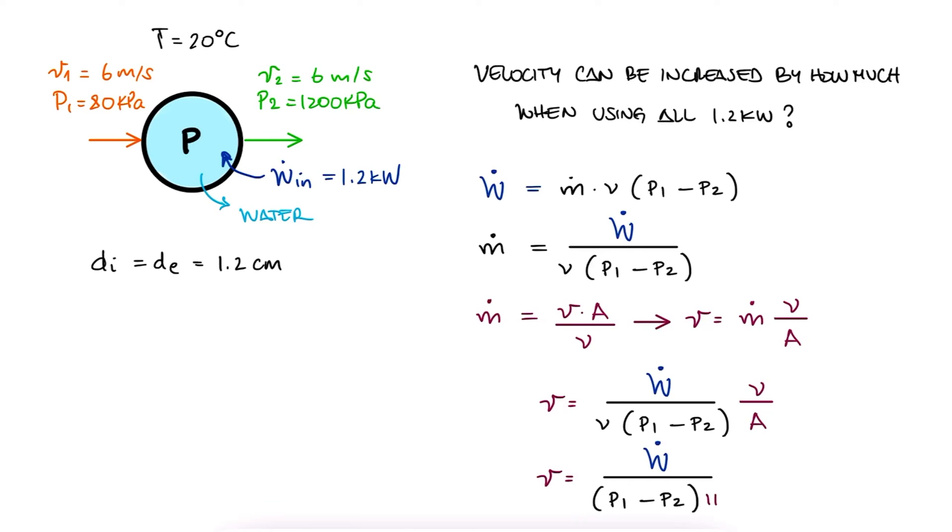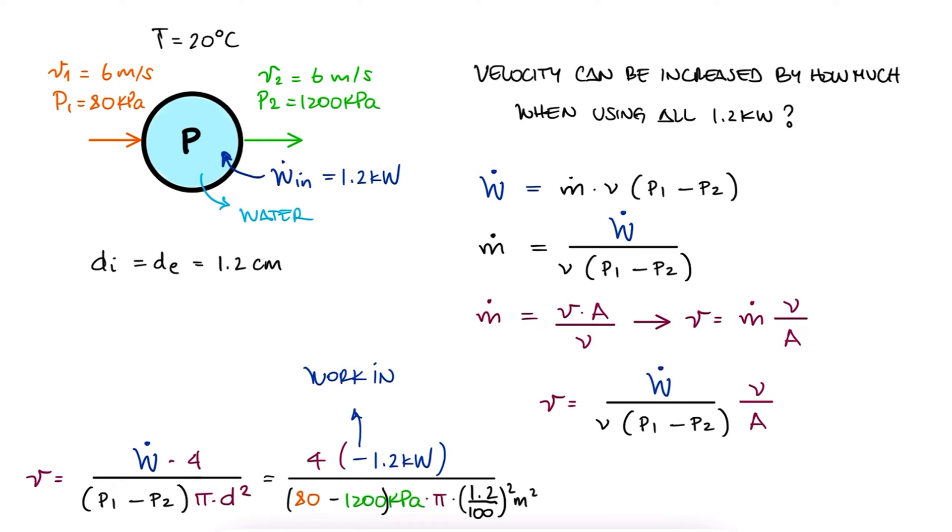We write the area in terms of the diameter, substitute all values, and find the speed of water if all 1.2 kilowatts were being used. This means that the speed of water can be increased by 3.47 meters per second.